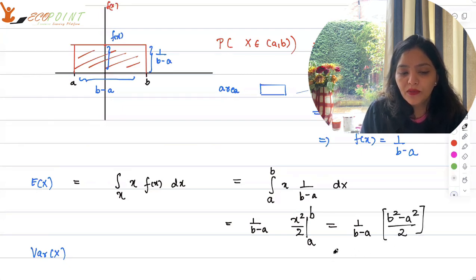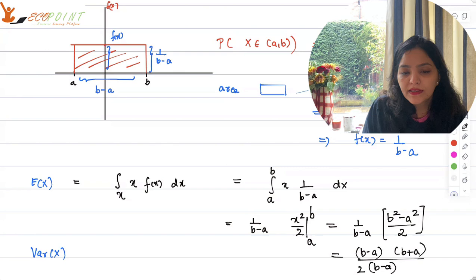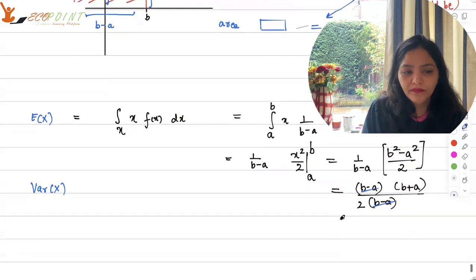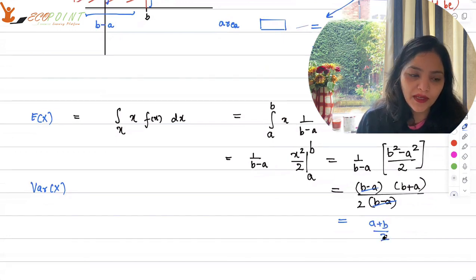So therefore 1 upon b minus a here and what you get is b square minus a square upon 2. Well, you can use the property a square minus b square. So b square minus a square is nothing but b minus a, b plus a upon b minus a into 2. So of course this cancels off and what you are left with is a plus b by 2. So what is the average? a plus b by 2.